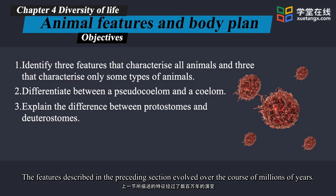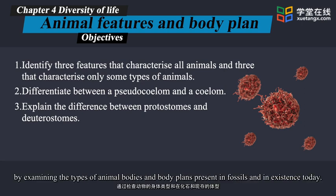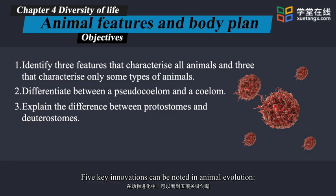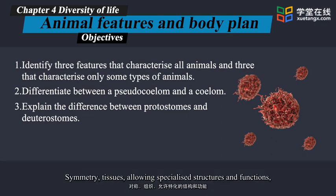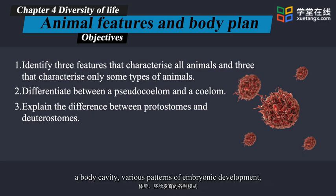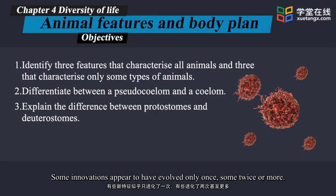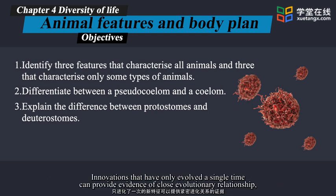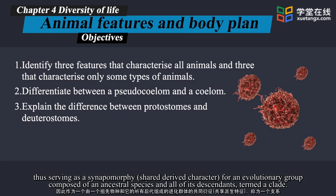The features described in the preceding section evolved over the course of millions of years. We can understand how the history of life has proceeded by examining the types of animal bodies and body plans present in fossils and in existence today. Five key innovations can be noted in animal evolution: symmetry, tissues allowing specialized structures and functions, a body cavity, various patterns of embryonic development, and segmentation or repeated body units. Some innovations appear to have evolved only once. Innovations that evolved a single time can provide evidence of close evolutionary relationship, serving as a synapomorphic shared-derived character for a clade — an evolutionary group composed of an ancestral species and all of its descendants.